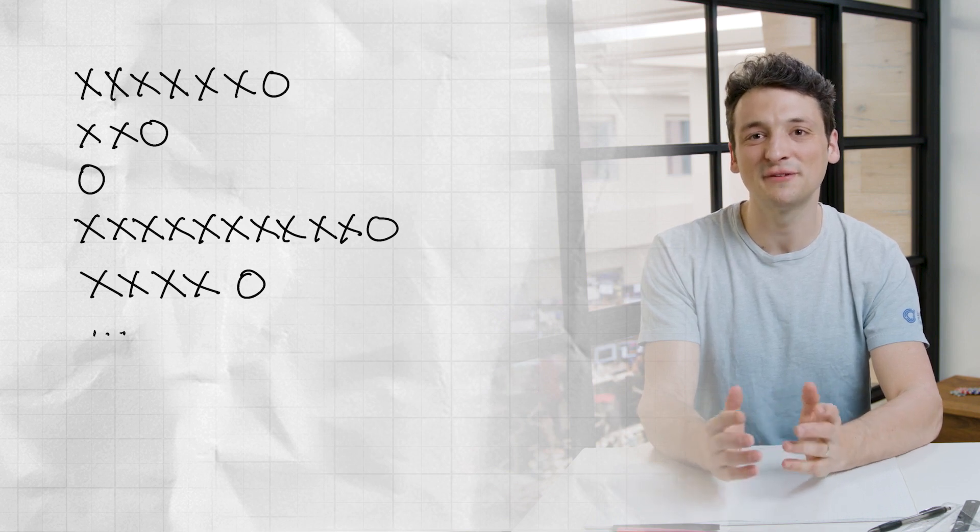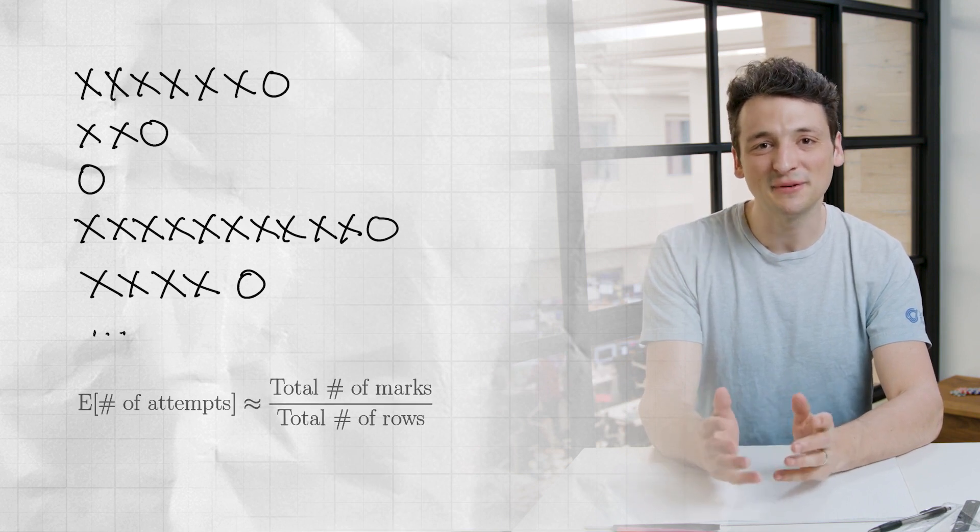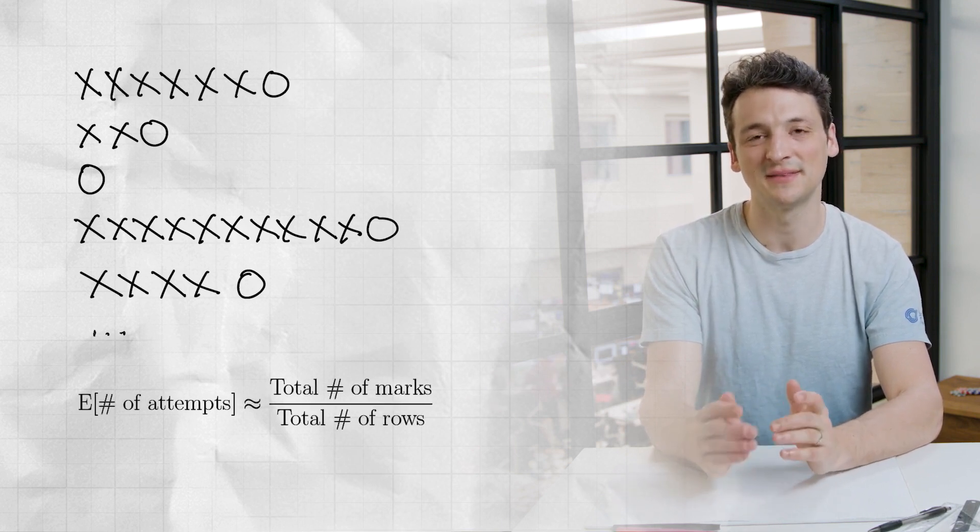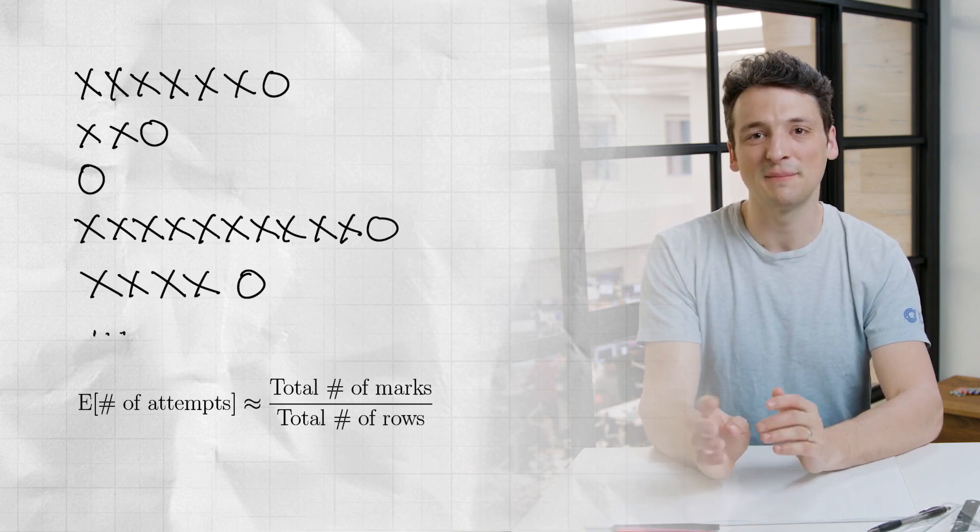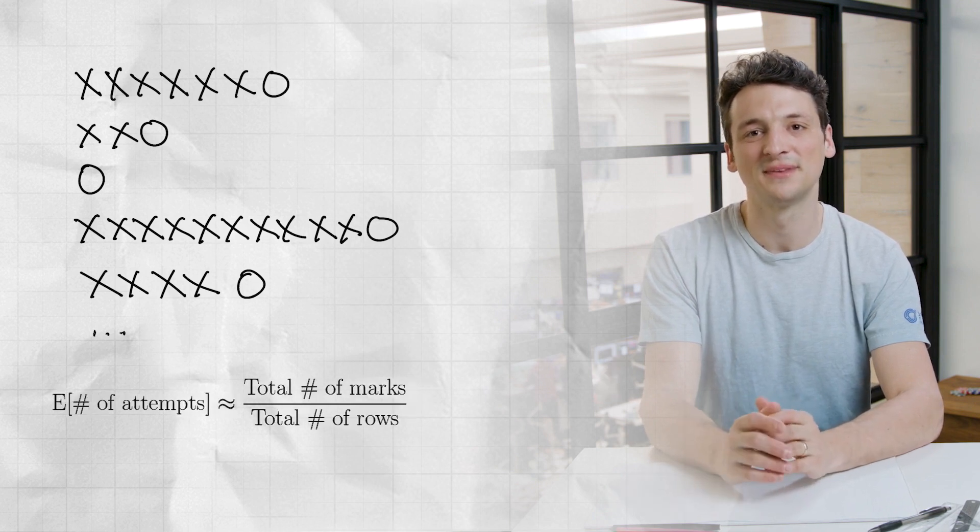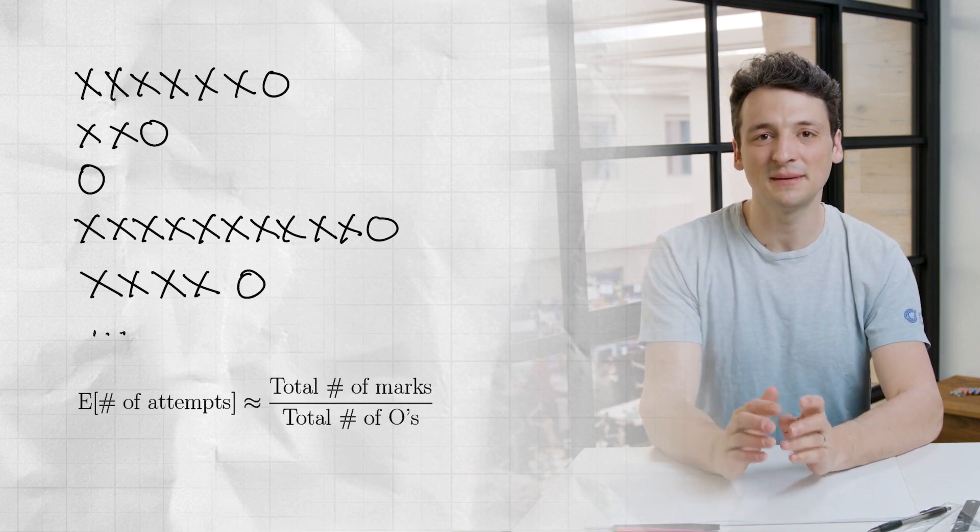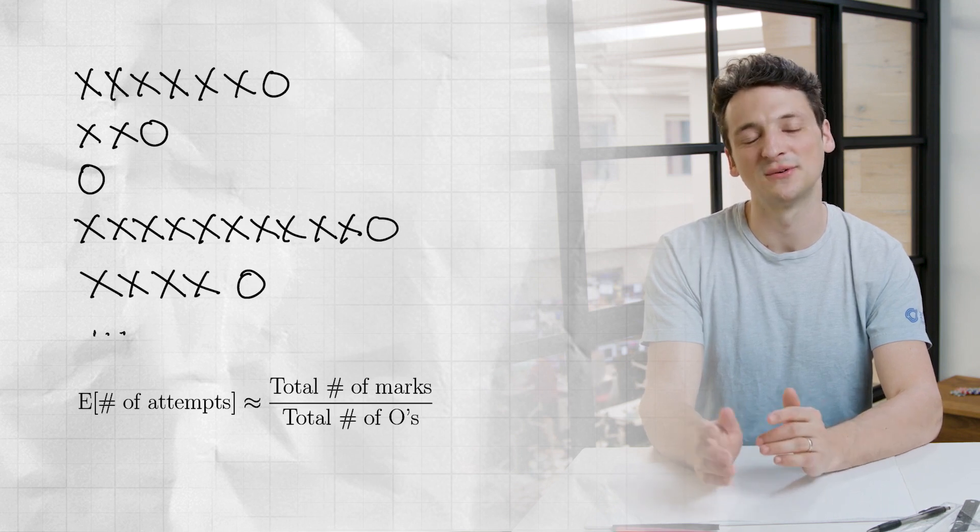Each row marks the number of misses with an x and the make at the end with an o. If she does this for a huge sample, then she could simulate the end of her practice by choosing a row at random from the sample. This means that the expected number of attempts is the expected number of marks on a random row of that record. That is, the expected number of attempts equals the total number of marks divided by the total number of rows. But we know that there is the same number of rows as there are made shots since every row ends with an o.